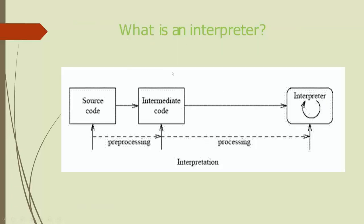An interpreter is similar to a compiler, but the pre-processing step is faster. The interpreter goes through each line of code and executes it in a virtual environment. When it encounters an error, it stops right there, asks the programmer to correct the error, and then continues from that point. That's why an interpreter is faster at pre-processing. However, it does not generate an object file ahead of time — the object file is generated at runtime itself. So every time an interpreted program is run, an object file must be generated, making the processing time longer.